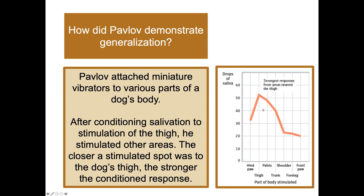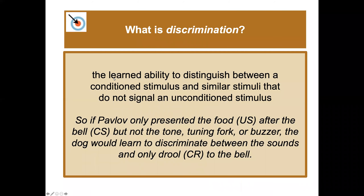Discrimination is the learned ability to distinguish between a conditioned stimulus and similar stimuli that do not signal an unconditioned stimulus. For example, Pavlov only presented food after the bell but not after a tuning fork or buzzer, so the dog learned to discriminate between the sounds and only drool to the bell.